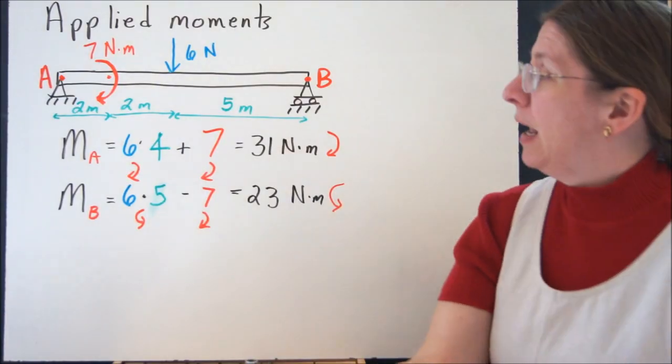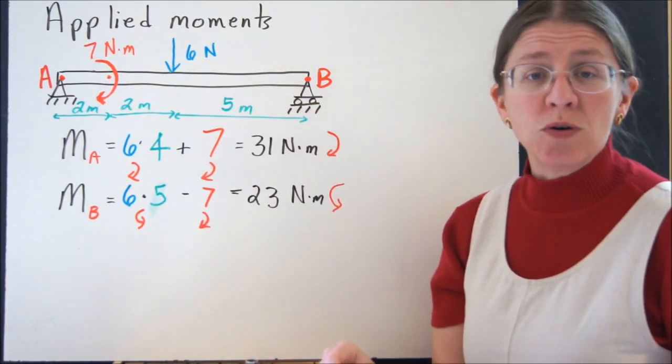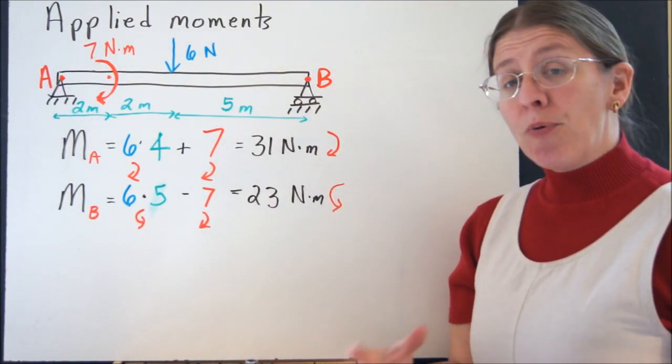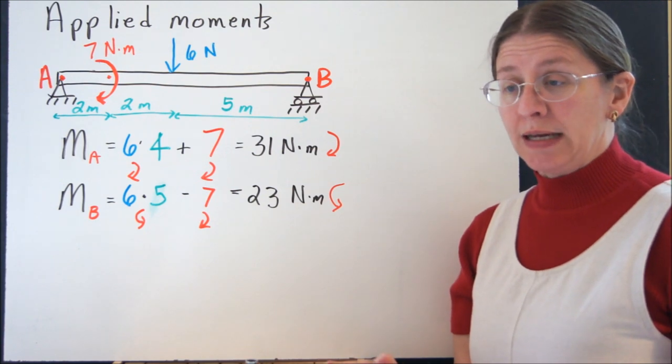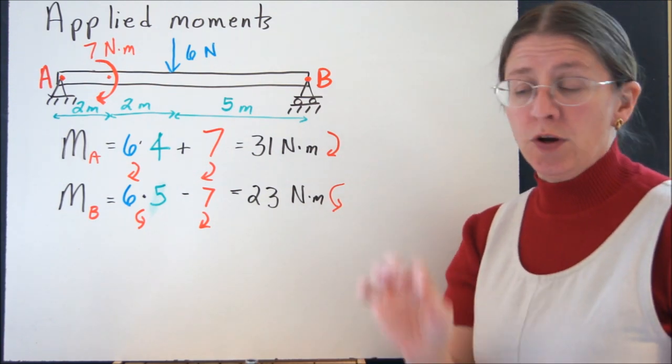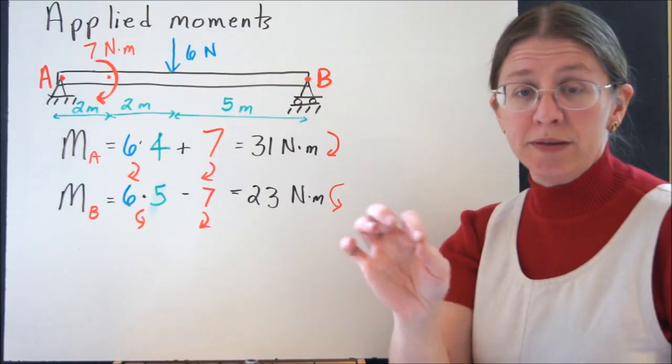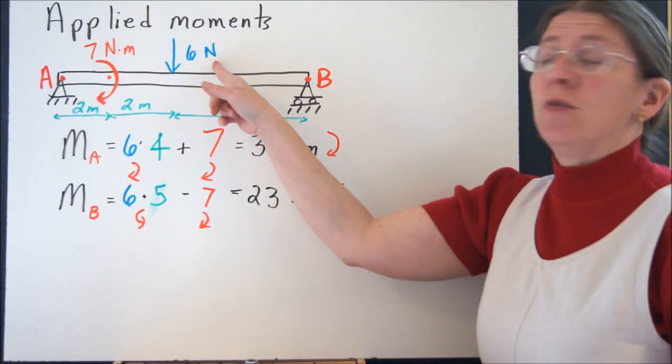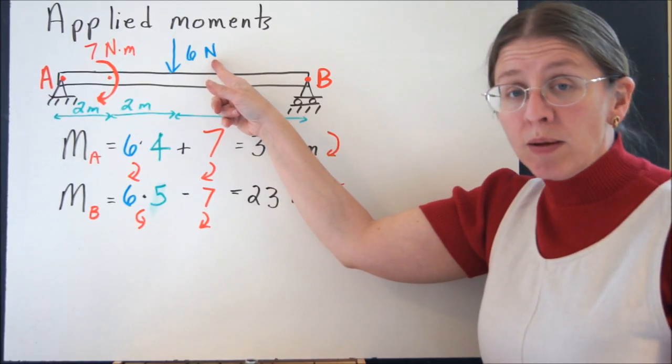Now it shows up a lot as an applied moment, and this is why I sort of lumped those two things together. In a problem, sometimes what we want to say is, there's a couple here. There's a tendency to turn at this point. Like I would give you this 6N load in your problem.